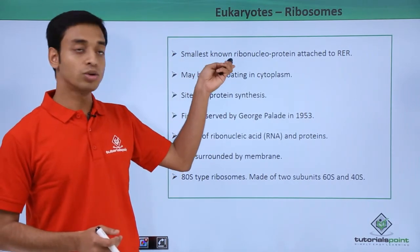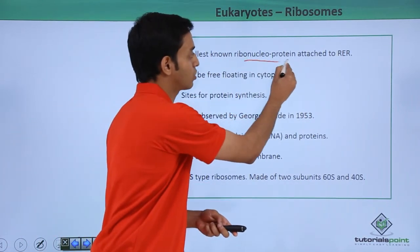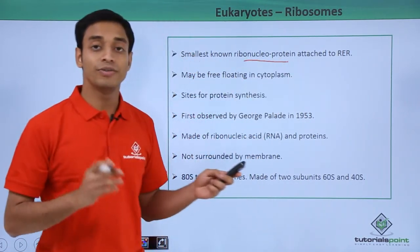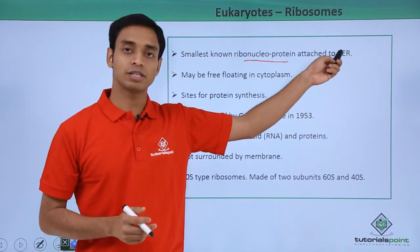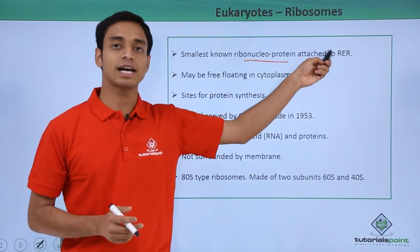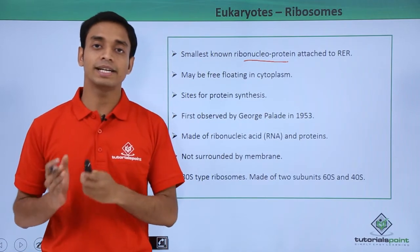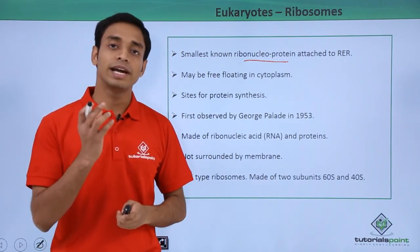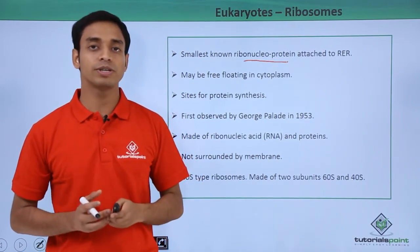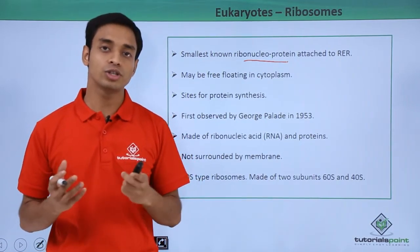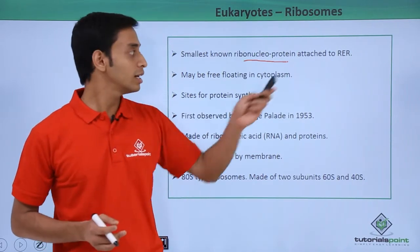Ribosomes are the smallest known ribonucleoprotein structures which remain attached with the rough endoplasmic reticulum, that is RER. So these ribosomes remain attached with the endoplasmic reticulum — specifically the rough endoplasmic reticulum.